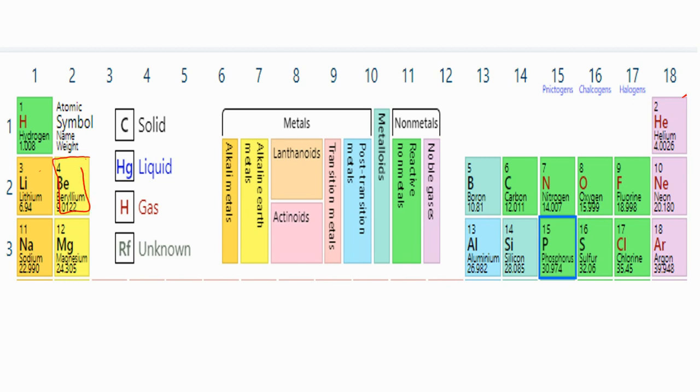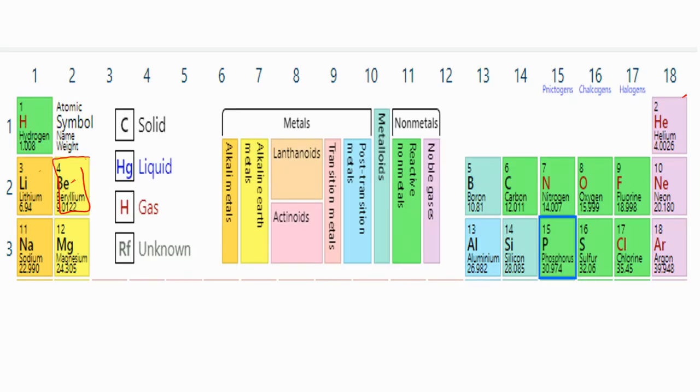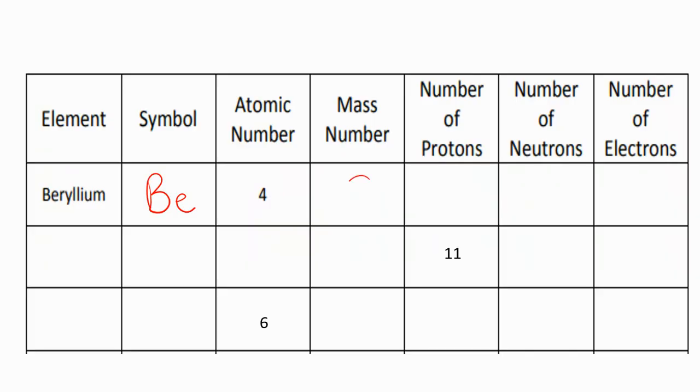And 4 is the atomic number. The chemical symbol is going to be Be. So if I come back to my chart, my symbol is a capital B and a lowercase e because your second letter is always going to be lowercase and your first one is always going to be uppercase. The mass number for beryllium is 9.